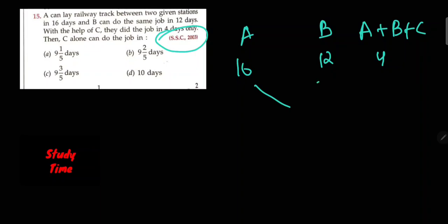Take the LCM of 16, 12, and 4, which is 48. A's efficiency is 3, B's efficiency is 4, and A plus B plus C's efficiency is 12. So A plus B equals 3 plus 4 equals 7. Therefore C's efficiency is 12 minus 7 equals 5.